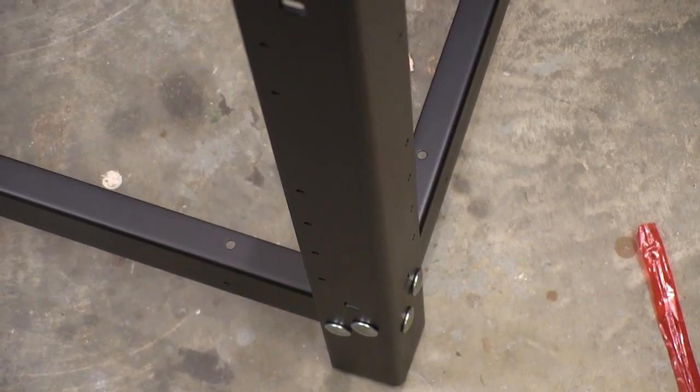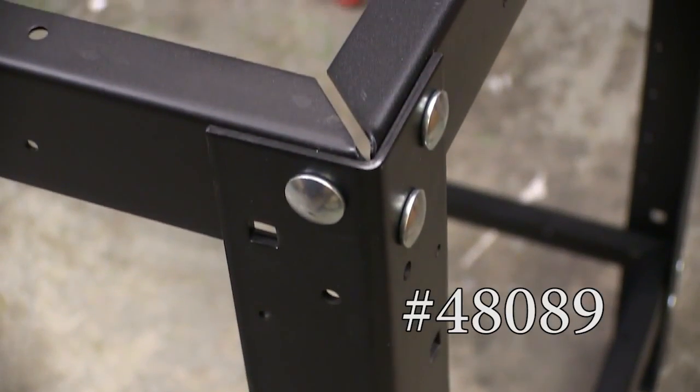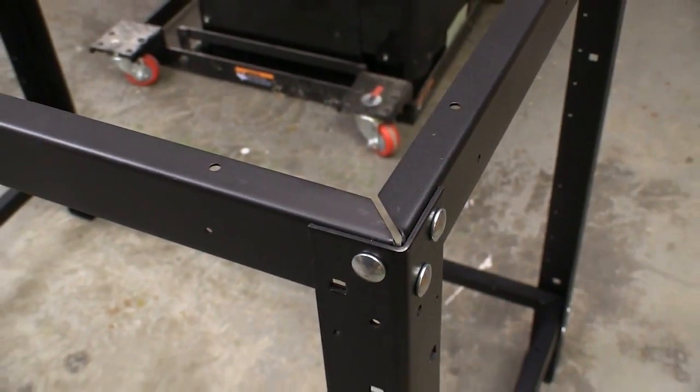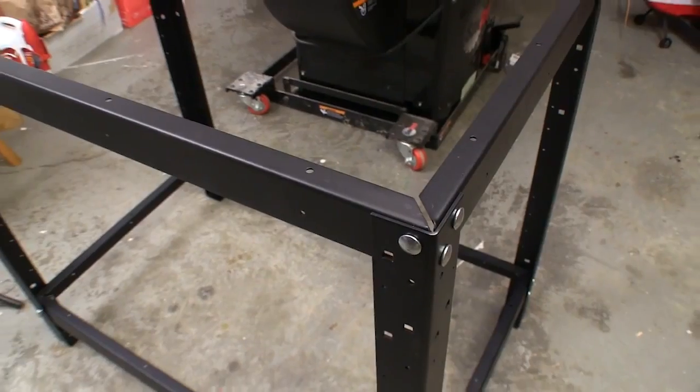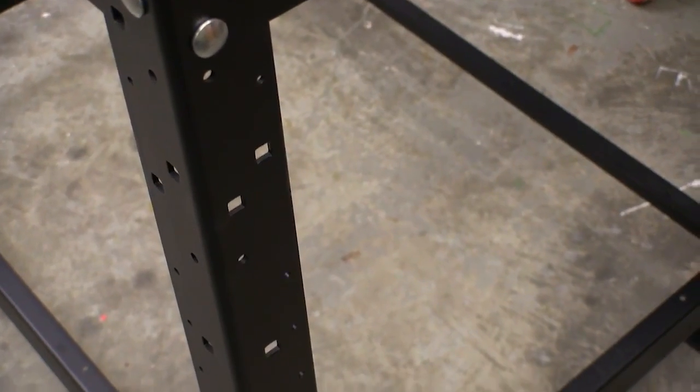I'm sure you could build a base to go underneath the T-track tabletop, but Rockler offers this metal one that's both very tough and very easy to use. This stand is 24 inches wide by 36 inches long and 32 inches tall, and that's just perfect to go underneath this table.